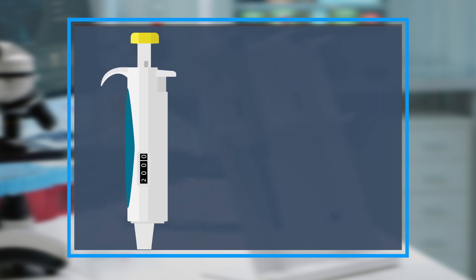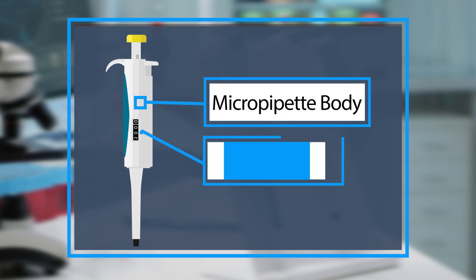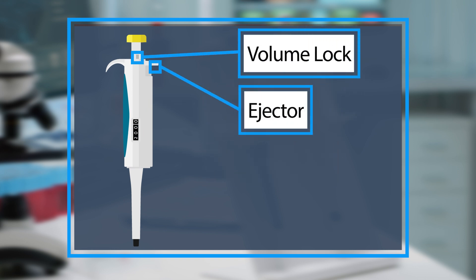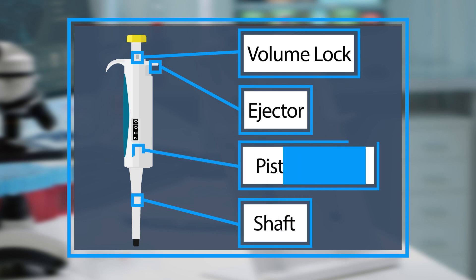The remaining parts of the micropipet include micropipet body, volume display, ejector, volume lock, shaft, piston, and internal components.